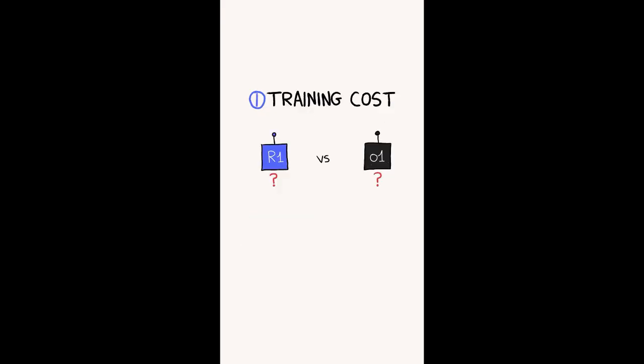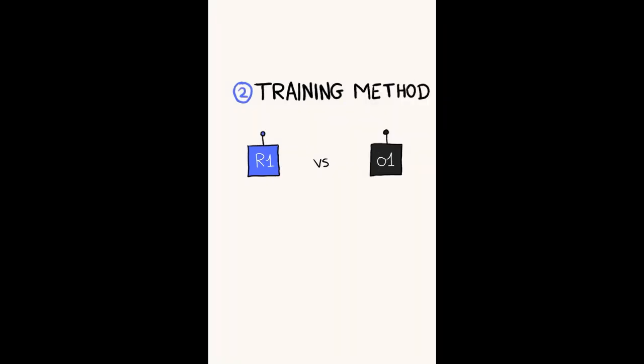First, the training cost. We don't have specific numbers on how much R1 or O1 cost to train. The $5.6 million figure being reported is misleading because that's the cost of the final training run of the base model called V3. The names are terrible, I know.